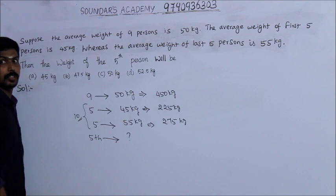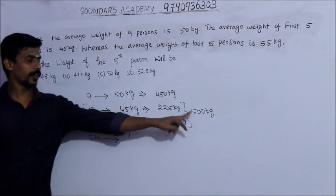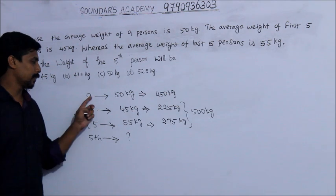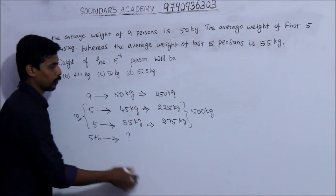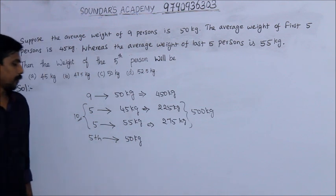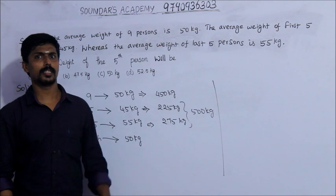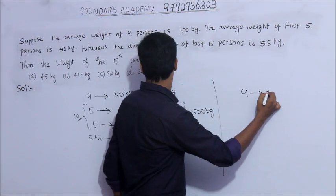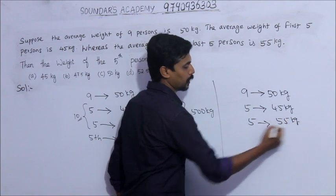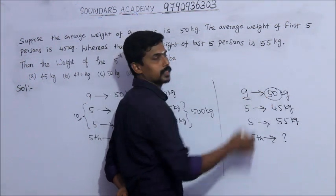The first 5 persons and the last 5 persons share a common person. Adding the two group totals: 225 plus 275 equals 500 kg. Since the total of all 9 persons is 450 kg, the weight of the 5th person is 500 minus 450, which equals 50 kg.